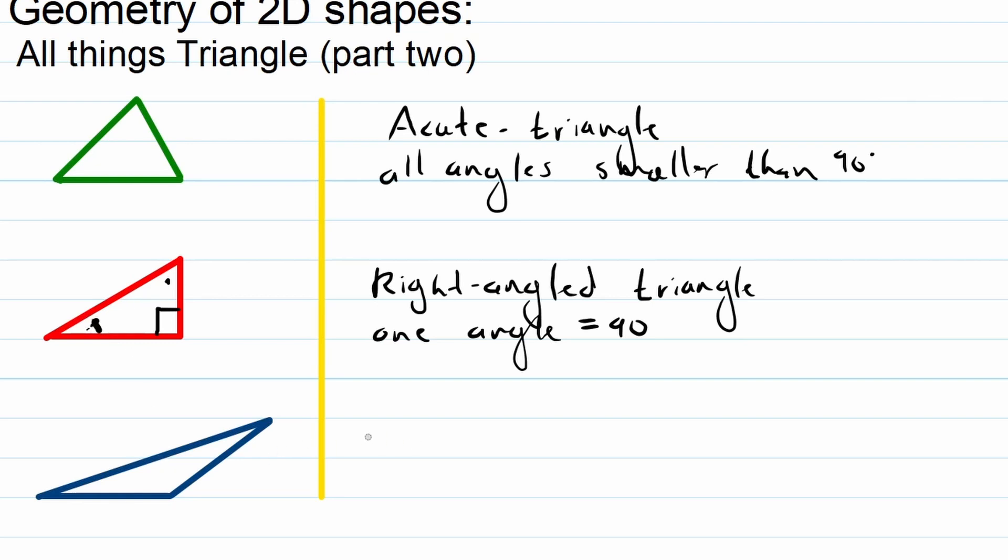And then the blue one over here is obtuse angle triangle. So what this means is that one of the angles is bigger than 90 but smaller than 180. So this angle right over there, let's just call it x, will be bigger than 90 but smaller than 180. That's an obtuse angle triangle. So these are three other properties you need to remember.